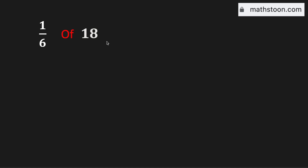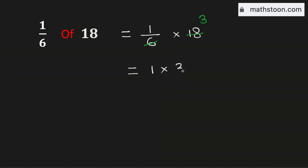To find 1/6th of 18, we need to multiply 1 over 6 by 18. We know that 6 goes into 18 three times. Therefore, it is equal to 1 times 3, which is the same as 3.